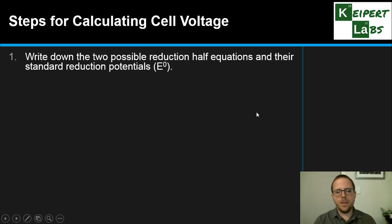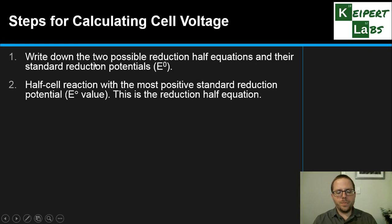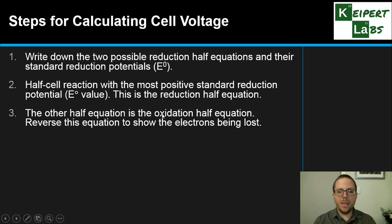The steps involved: First, we write down the two possible reduction half equations from our reduction potentials table and their standard E° values. So you write them down, both as reductions and their values. The half cell reaction that has the more positive standard reduction potential will be the one that will reduce, so it will remain the same. The other one will be oxidation, and we will reverse the equation so that instead of showing two reductions, we'll now have an oxidation and a reduction.